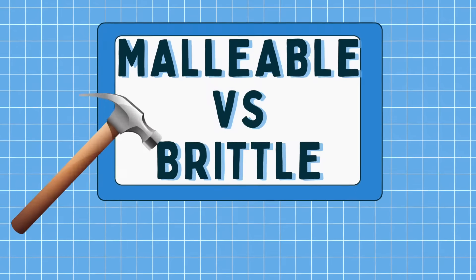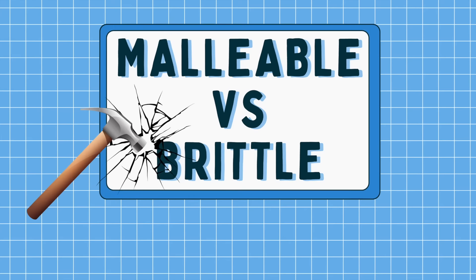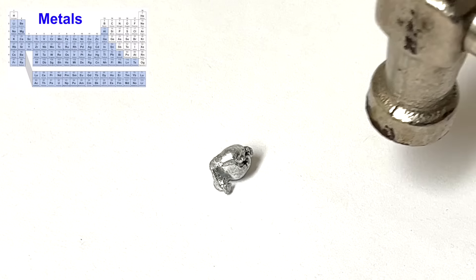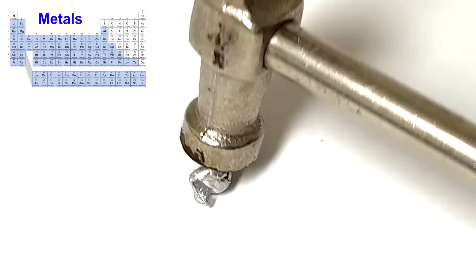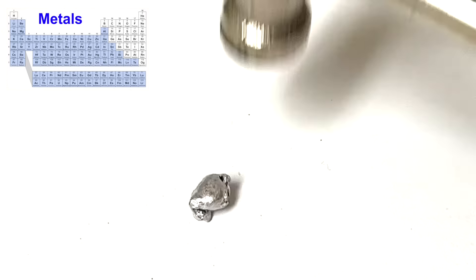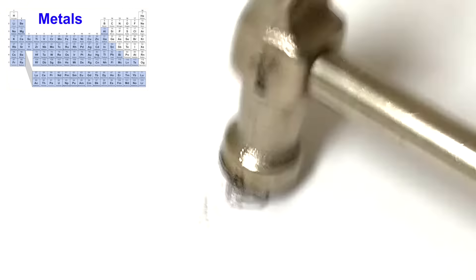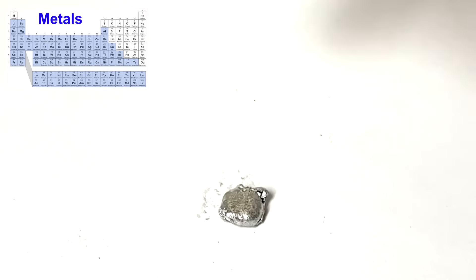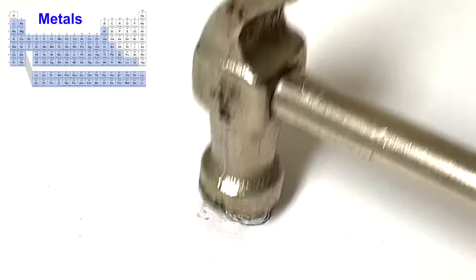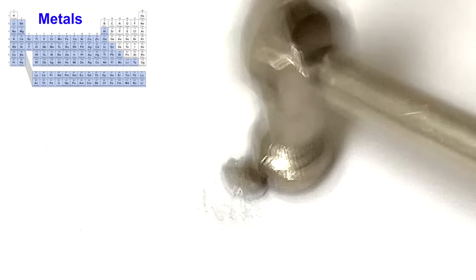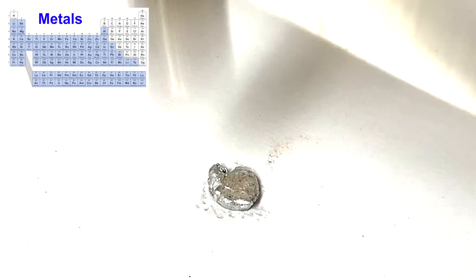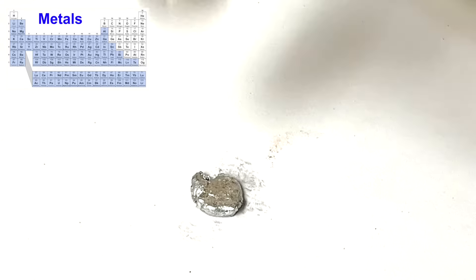Now let's take a look at what happens when you hit them with a hammer. When you take a piece of metal and hit it with a hammer, you notice it doesn't break. In fact, if you keep hitting it, it just gets flatter and flatter. That means it's malleable. So metals are malleable, which means they flatten when they're hit.